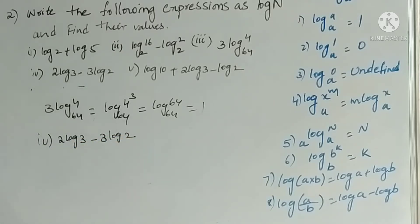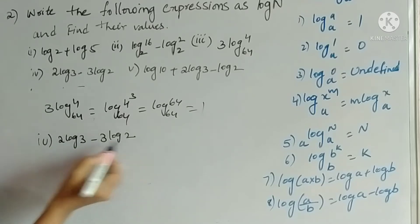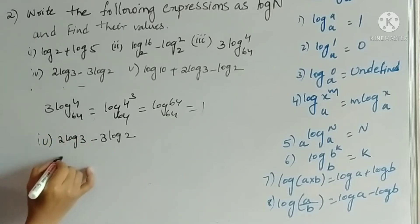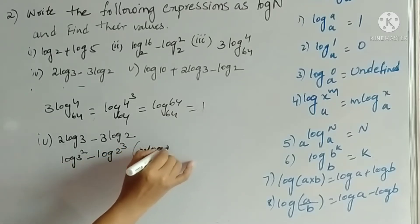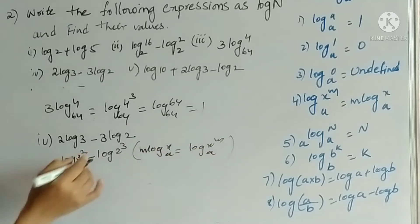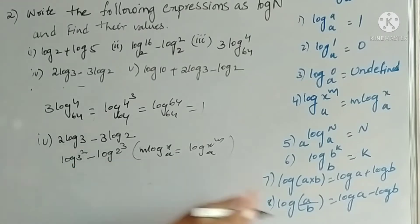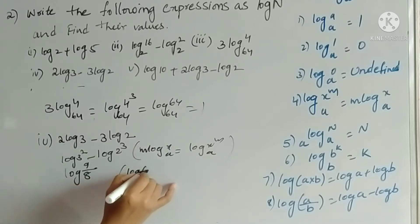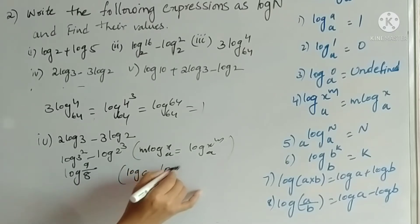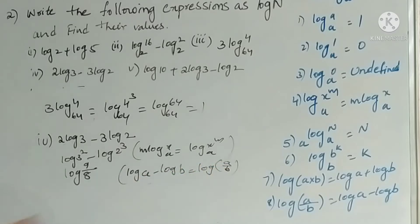The fourth one is 2 log 3 minus 3 log 2. Using m log x going to the power: this becomes log(3 squared) minus log(2 cubed). Then applying log a minus log b equals log(a/b), we get log(9/8). We cannot simplify 9/8 further, so the answer is log(9/8).